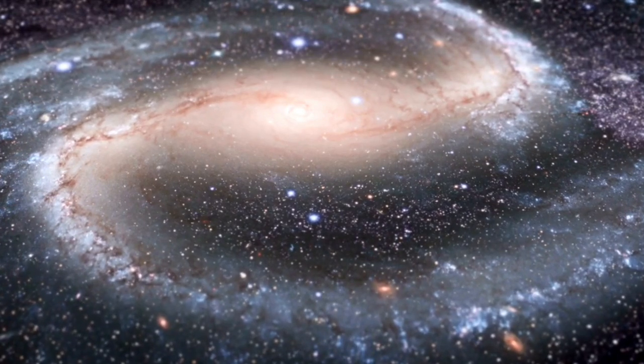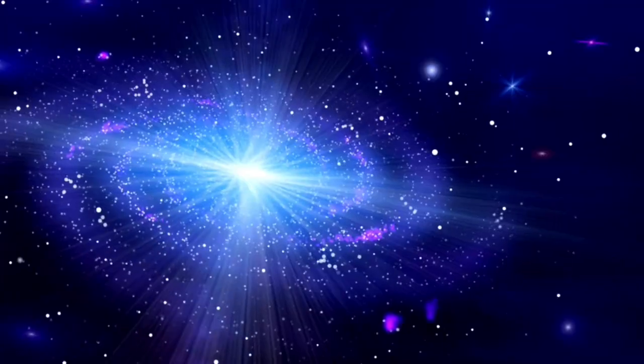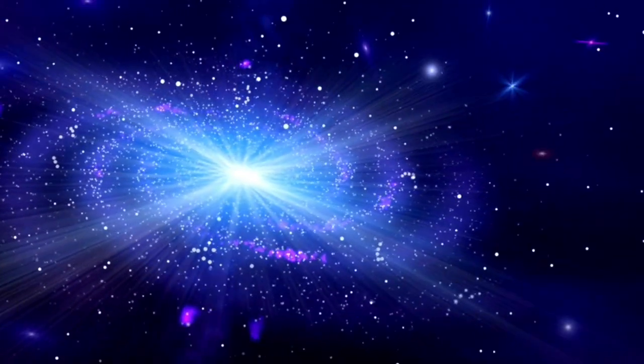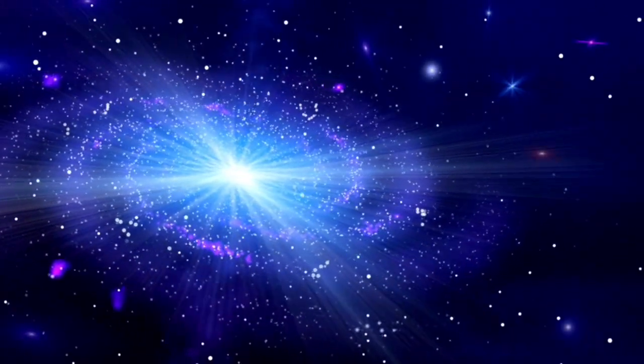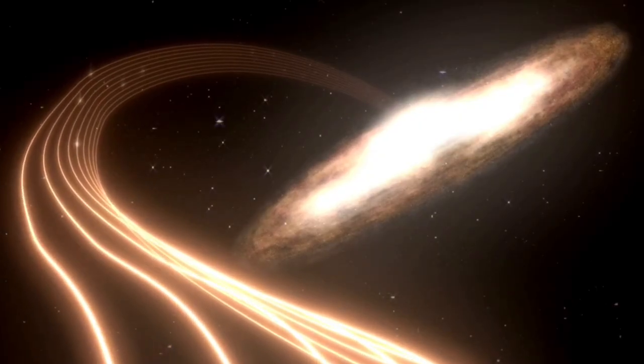Betelgeuse has been spotted moving through the interstellar environment at about 30 km/s. The Orion OB1 group, which contains the stars of Orion's belt, was thrown from where it was born, resulting in a bow shock extending beyond four light years.